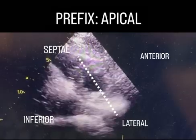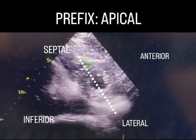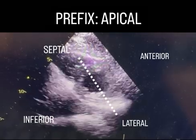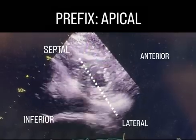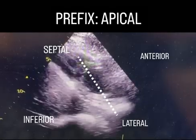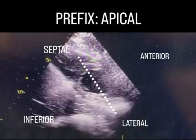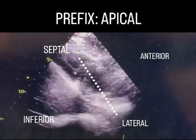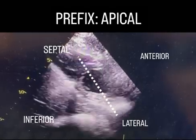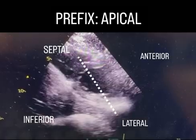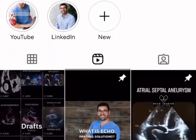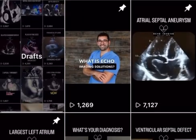Now that we have seen all of the short axis views of the left ventricle, it is important to note that we will see all of these segments in the apical images as well. If there is suspicion of hypokinetic or akinetic wall segments, it is crucial to see that in two views.